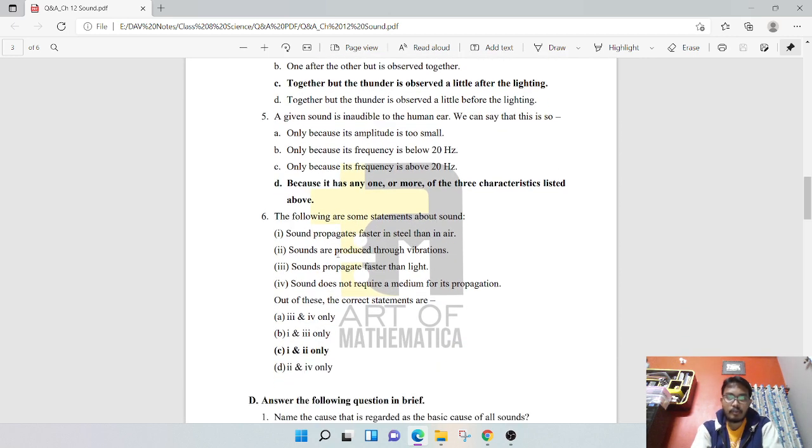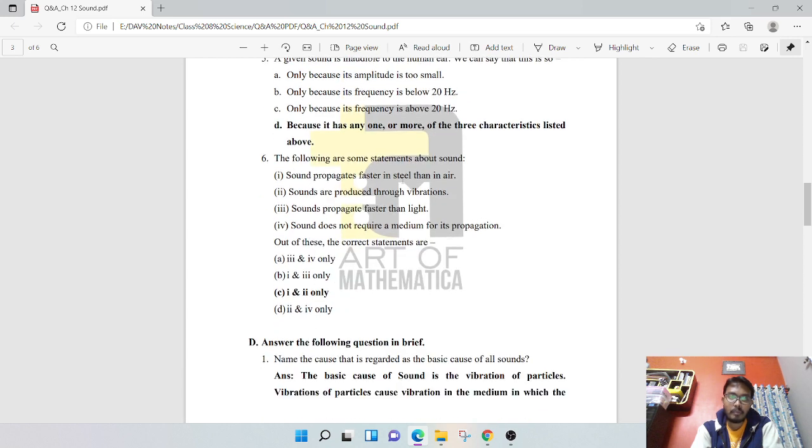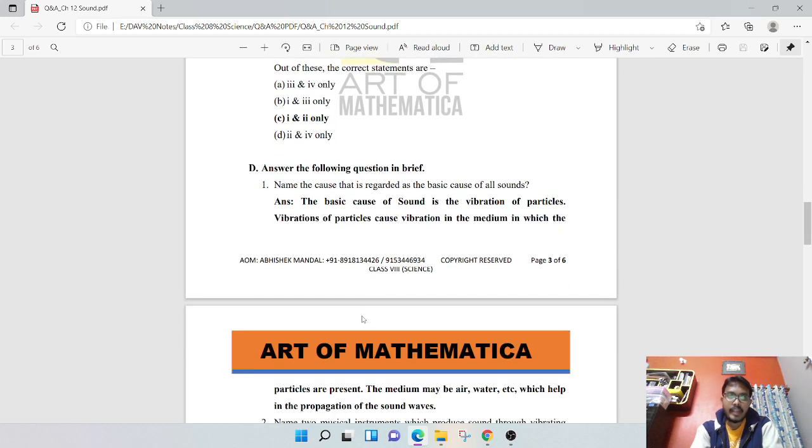The following are some statements about sound - which are correct? Sound propagates faster in steel than in air, sounds are produced by vibrations, sound propagates faster than light, sound does not require any medium for propagation. Options one and two are correct: sound propagates faster in steel than in air, and sounds are produced through vibration.